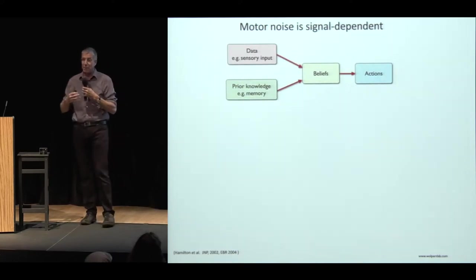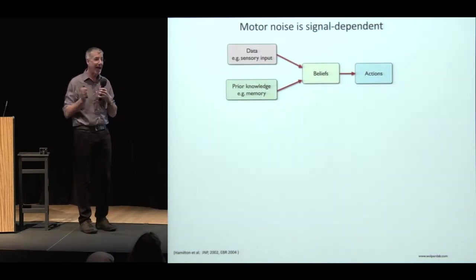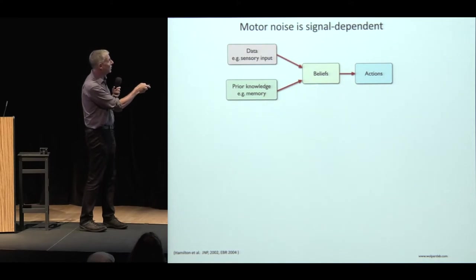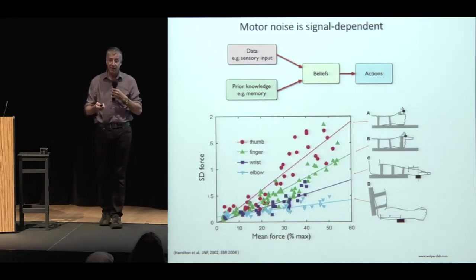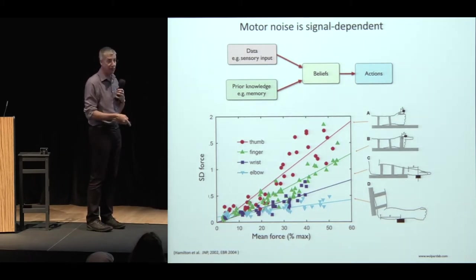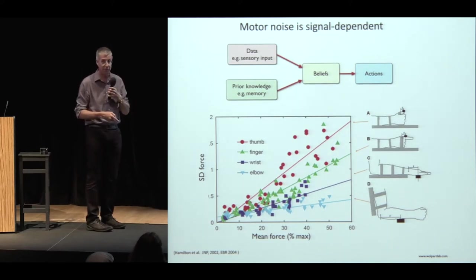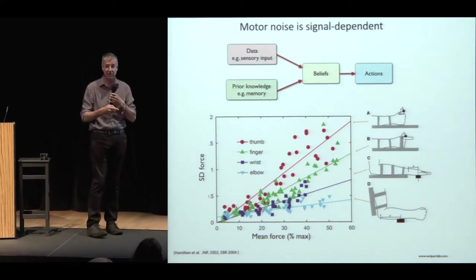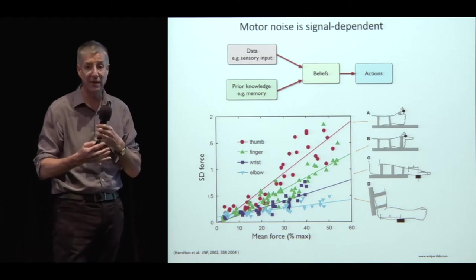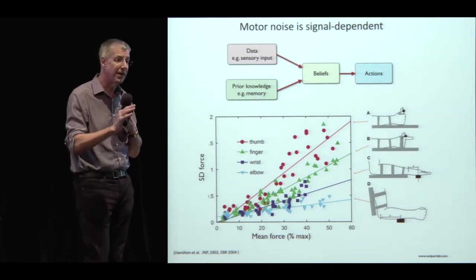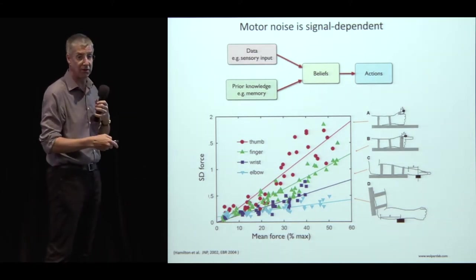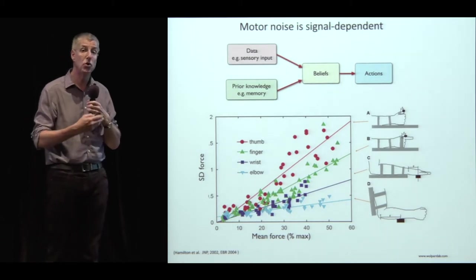But there's no use doing all those Bayesian things if you're not going to generate some action — the only output we have, apart from sweating, is through motor control. Having a belief, we have to generate actions. One problem is that the motor system is noisy. If you ask people to produce forces with their thumb, finger, wrist, or elbow and measure force as a percentage of maximum against its variability as a standard deviation, variability tends to scale with force — we call this signal-dependent noise. The amount of noise goes up with roughly a constant coefficient of variation. Interestingly, bigger muscle groups have less noise — a smaller coefficient of variation — because you've got more units to average over.